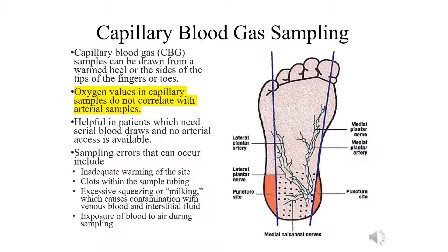Some sampling errors that can occur with capillary gases include inadequate warming of the site, clots forming within the tubing, excessive squeezing or milking when obtaining the cap gas, and exposure of blood to the air during sampling. Capillary blood gases remain the preferred method for assessing ventilation in pediatrics.